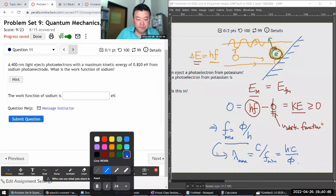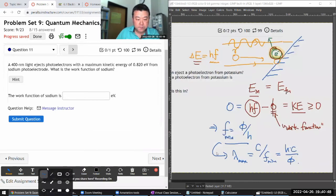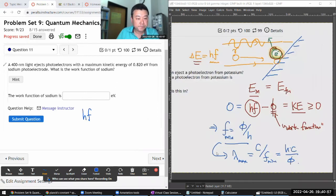So what we have is this relationship. The Planck's constant times the frequency, which is the energy of the photon coming in, which will be related to this with this wavelength, minus the work function, which we'll be looking for, is going to give me the maximum kinetic energy that we are given here.